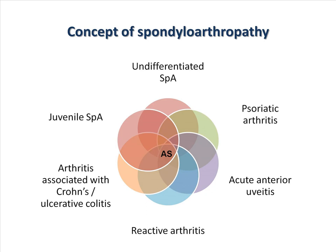Each disease has a predominant clinical phenotype, but they can have overlapping features, such as spinal and pelvic joint dysfunction, psoriasis, gut inflammation, and uveitis.